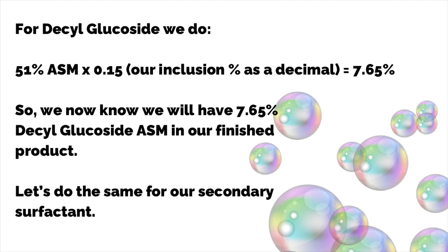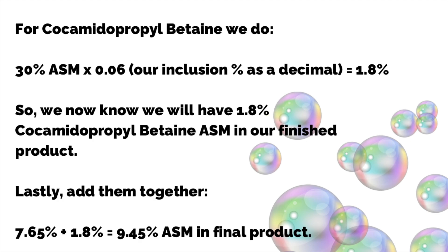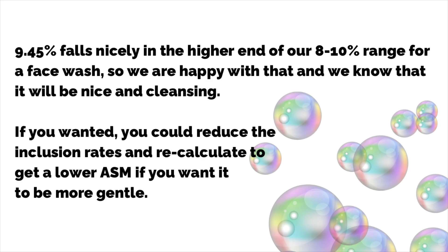Let's do the same for our secondary surfactant. For cocamidopropyl betaine: 30% ASM multiplied by 0.06 (our inclusion percent as a decimal) gives us 1.8%. So we'll have 1.8% cocamidopropyl betaine ASM in our finished product. The last thing to do is add both together: 7.65 plus 1.8 gives us 9.45% active surfactant matter in our final product.